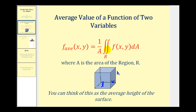One way to make sense of this formula is to remember that if f(x, y) is positive and continuous over the region R, this double integral would give us the volume under the surface. So if we take this volume and divide by A, the area of the region, you can think of this as taking the volume of a box and dividing by the area of the base, which leaves us with the height. So you can think of the average value of f(x, y) as the average height of the surface over the region R.